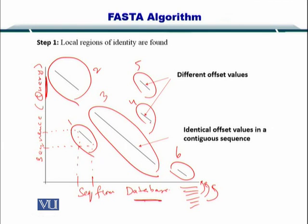Now if you look at diagonals number four and five here, they have different offset values. While if you look at diagonal number three, it has a very identical offset value and it is a contiguous, very long diagonal. And these are small diagonals.